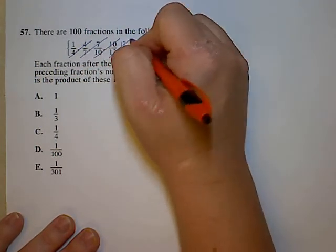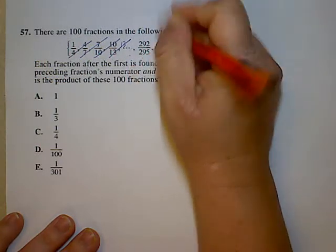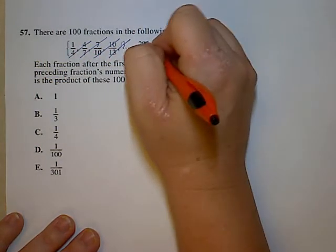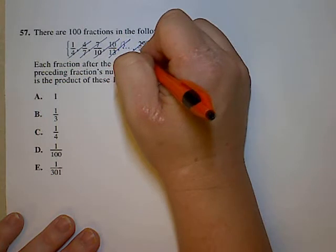We know there'd be a 13 up here divided by 1. This would be 1, this would be 1. And again, we know 292, and the number down here would be 292.